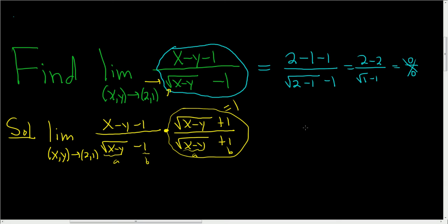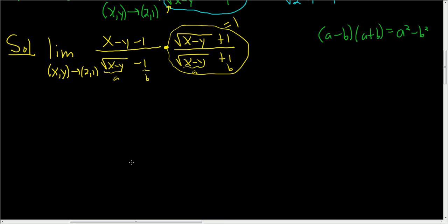And recall that if you have a minus b times a plus b, that's simply a squared minus b squared. So now we'll go ahead and apply the formula to our limit here.